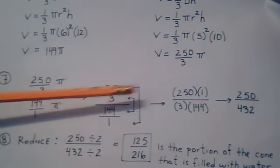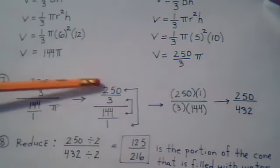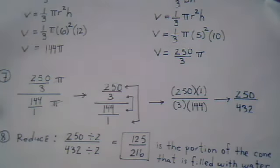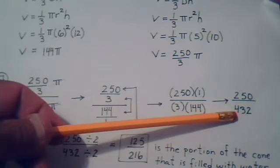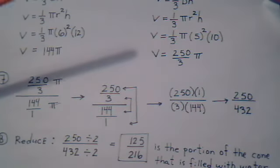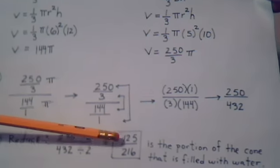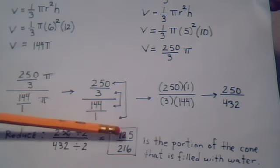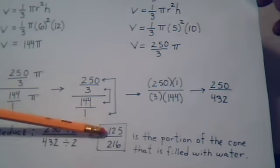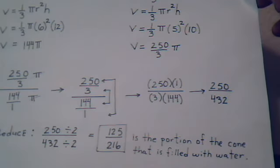The inner multiplication is the denominator. The outer multiplication is the numerator. Simplify, you get this number. And then simplify this to lowest terms, and you get this number. So you reduce. So this is the portion of the cone that is filled with water.